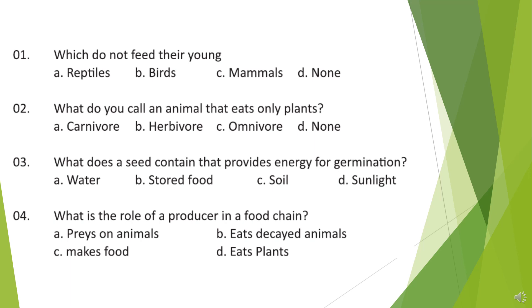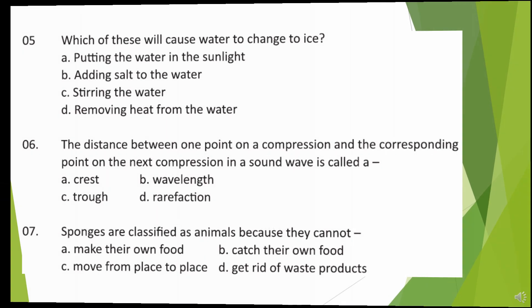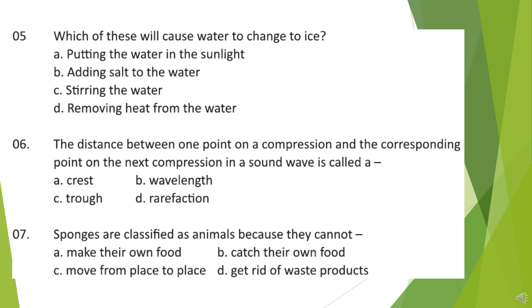Question 4. What is the role of a producer in a food chain? Question 5. Which of these will cause water to change to ice? Look at the options and choose your answer.